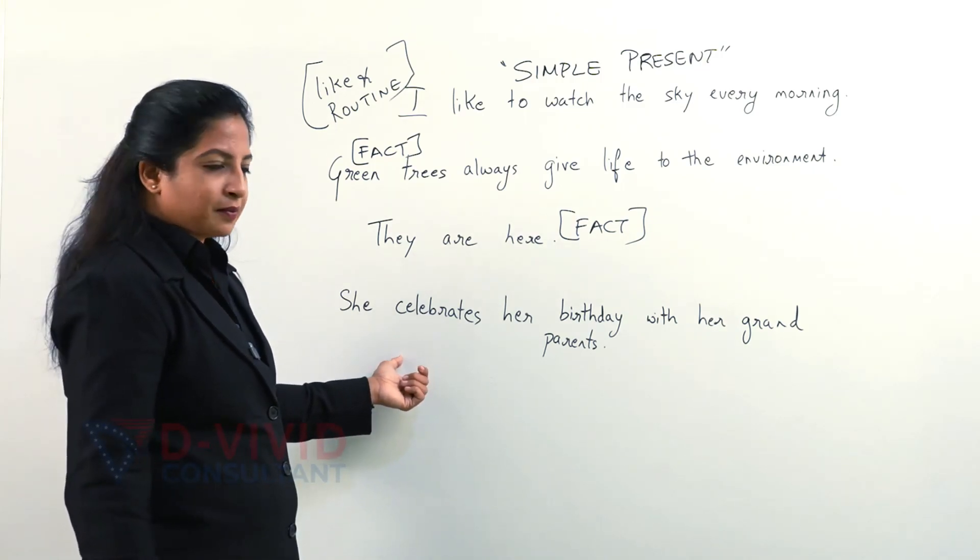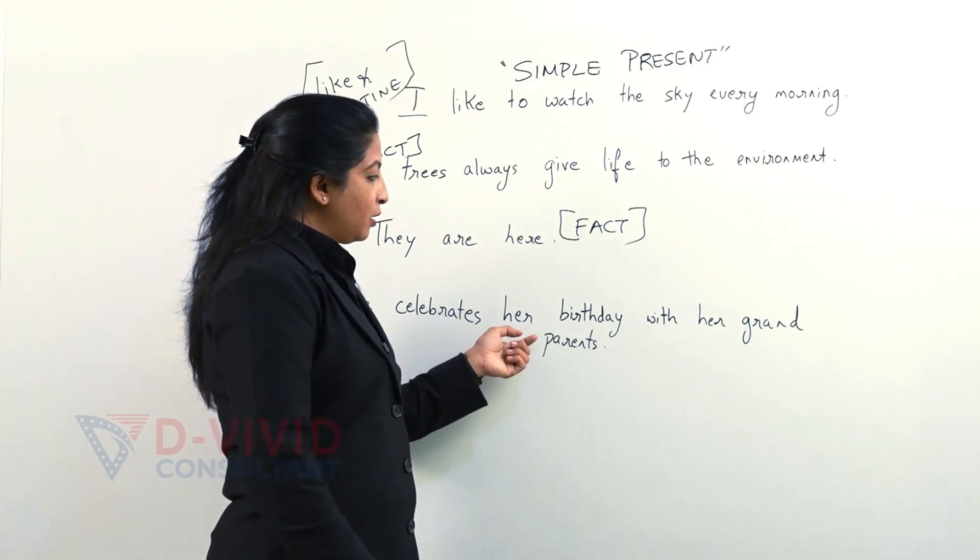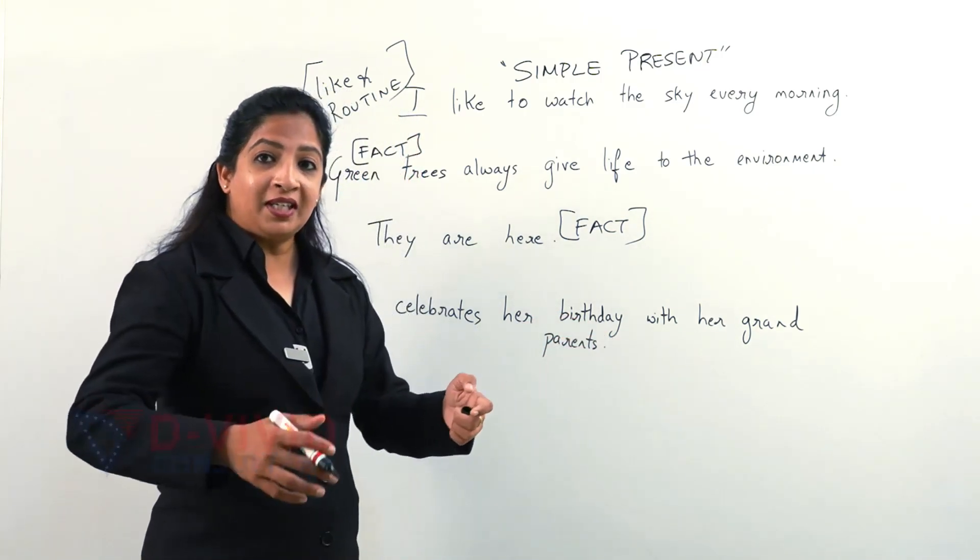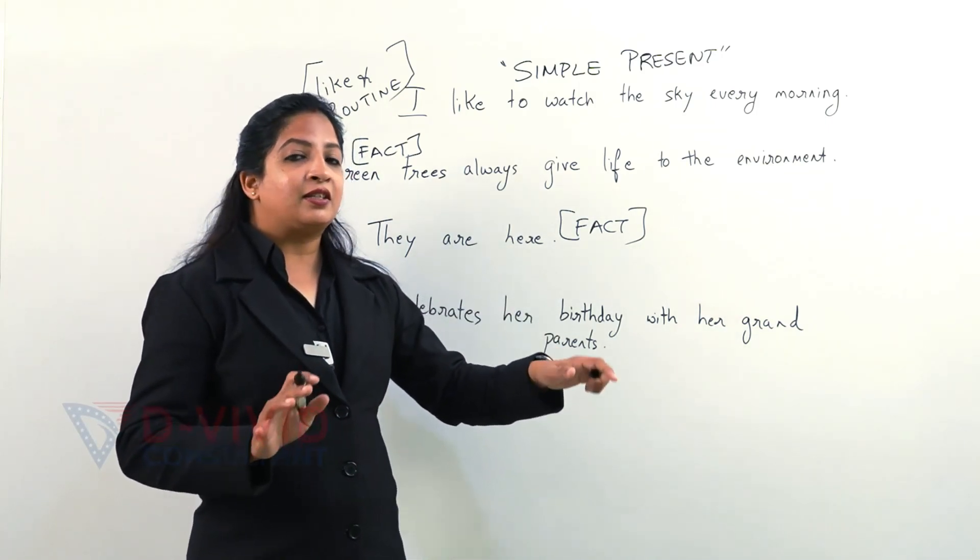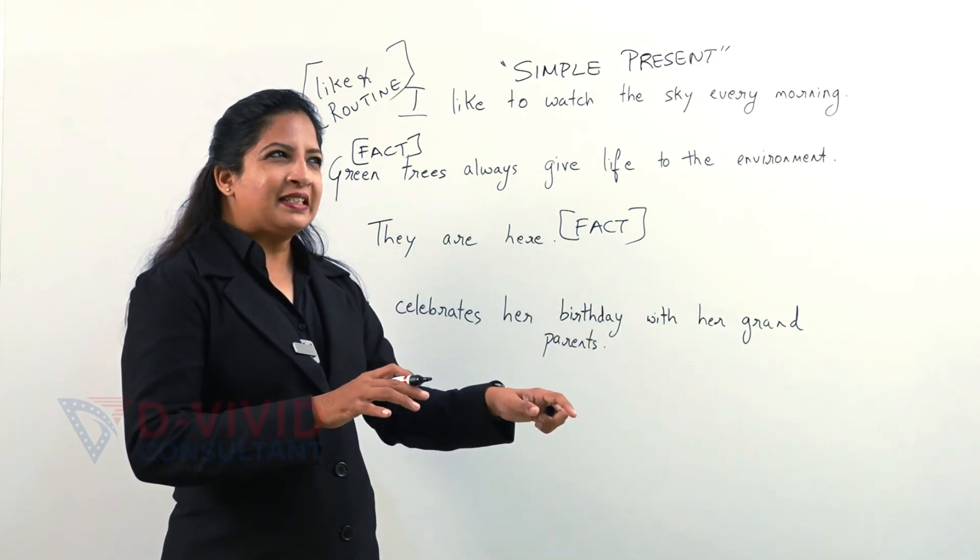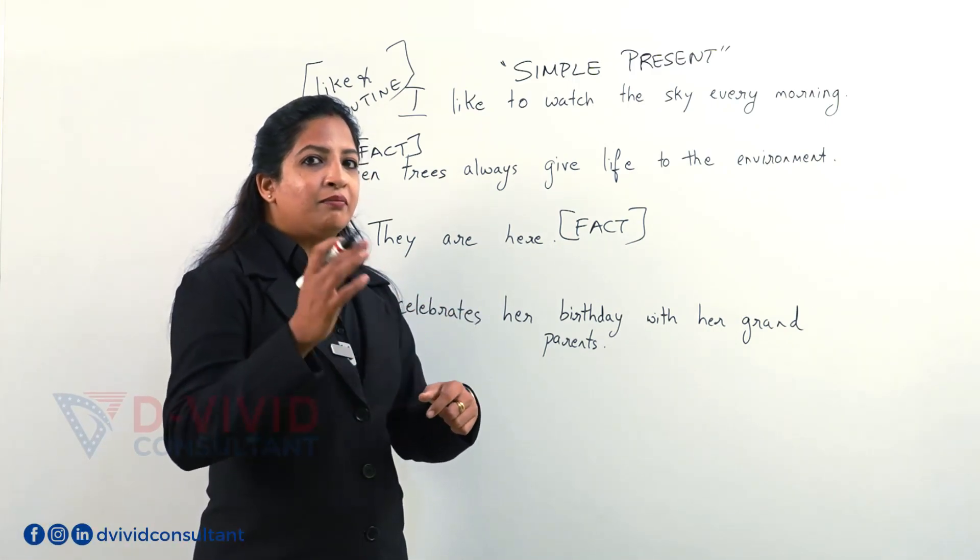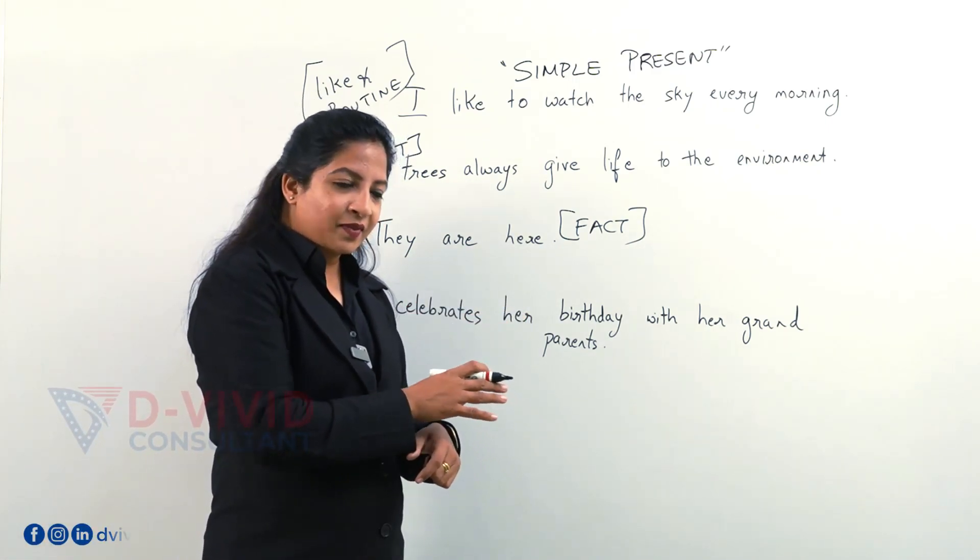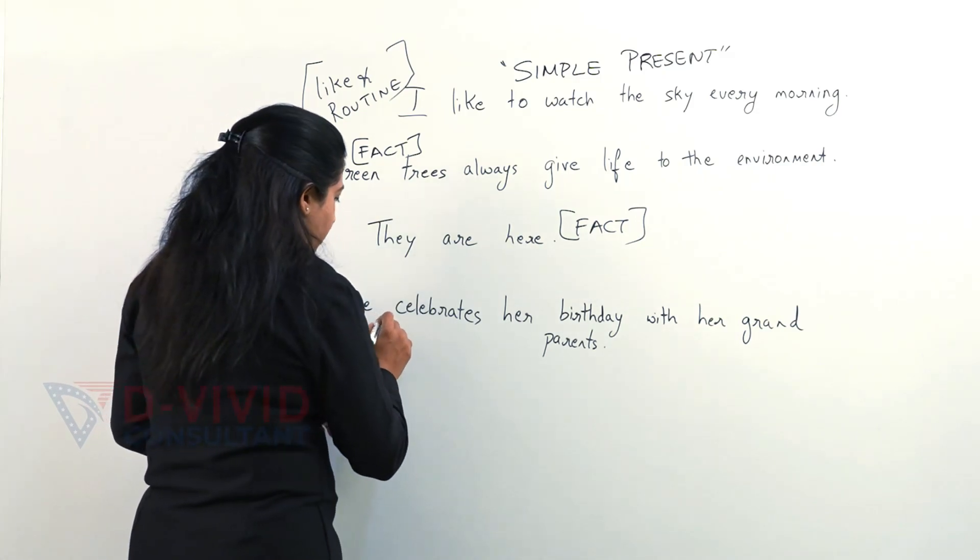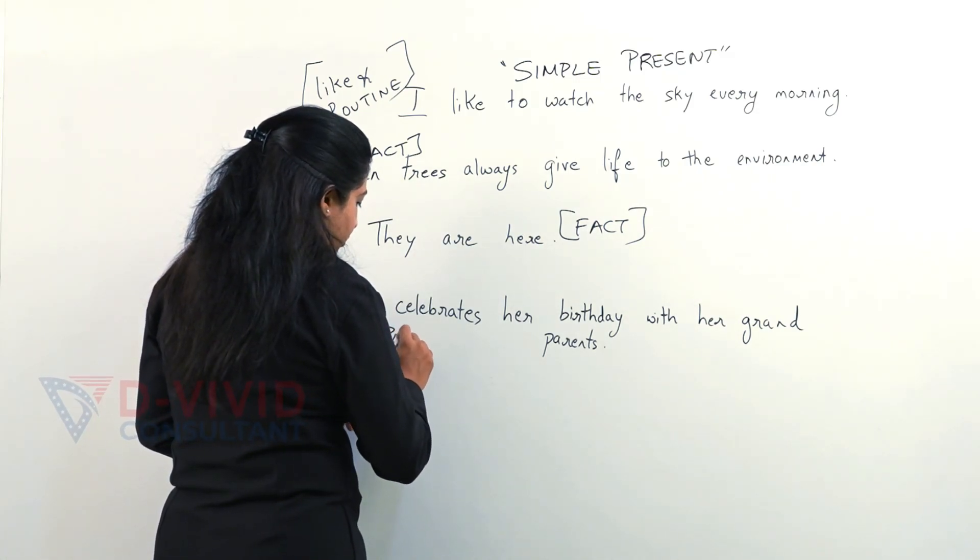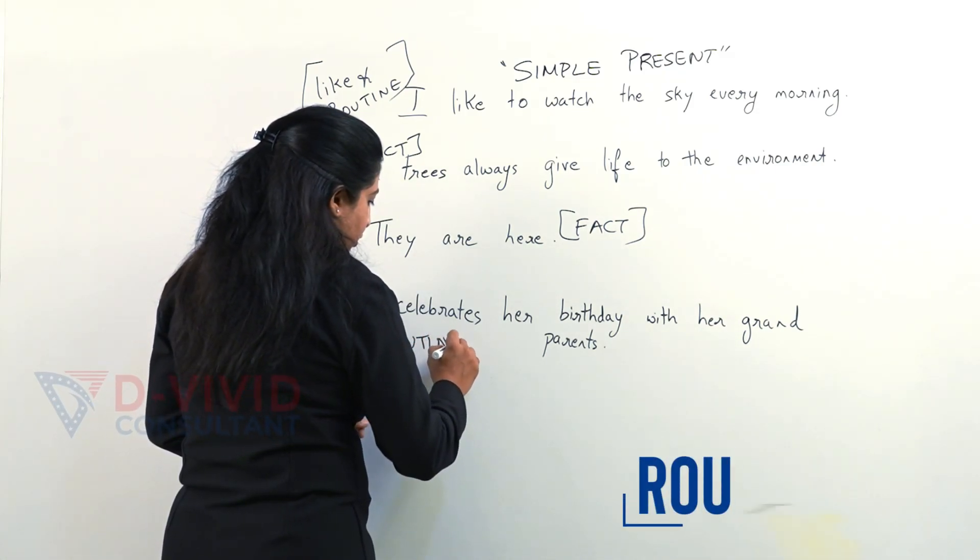What about this? She celebrates her birthday with her grandparents. That means every birthday she is with her grandparents. So I can say it is a yearly routine birthday to birthday. This falls under the category of routine.